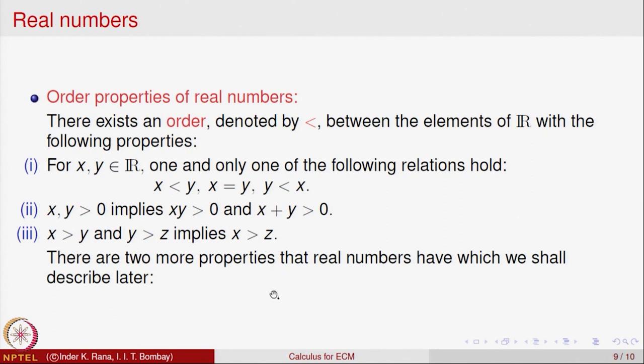There are two more properties of the real numbers which we shall describe later. What we have done is formalize the properties of numbers that we have been using since school education, in terms of set theory and binary operations — two binary operations of addition and multiplication, and an order with certain properties. The two extra special properties are called the Archimedean property and the completeness property. We need a bit more mathematical machinery to describe these two properties, so we will do it soon.